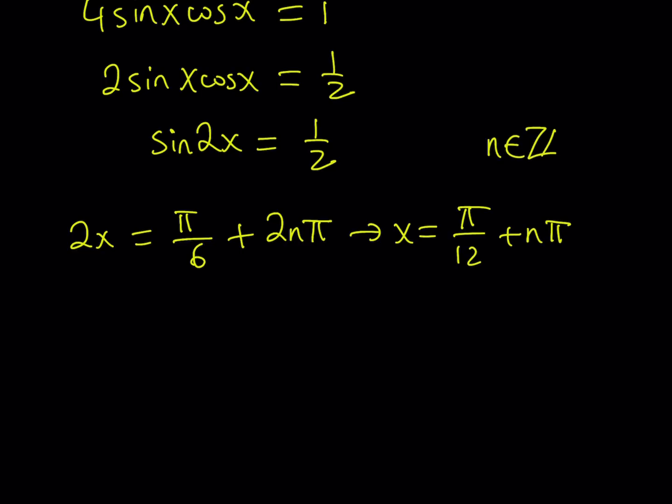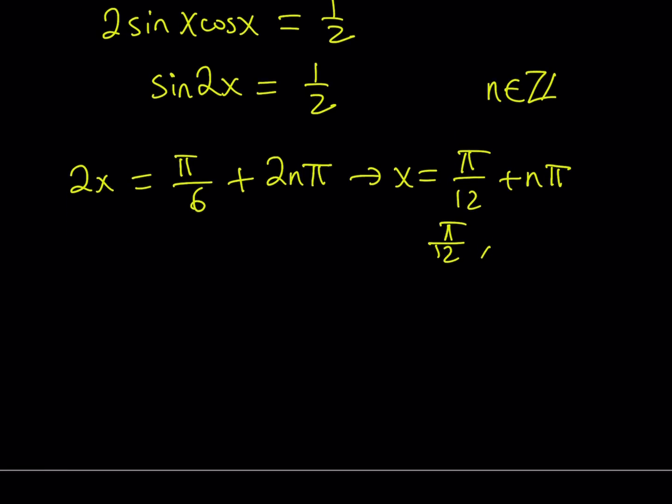So by replacing n with 0, 1, 2, 3, 4, 5, 6, you can find multiple values. If you want values that are between 0 and 2 pi, then you only use n equals 0 and n equals 1. So in other words, that gives you pi over 12, and if you add pi to it, it's going to be 13 pi over 12. Great. Those are particular solutions.